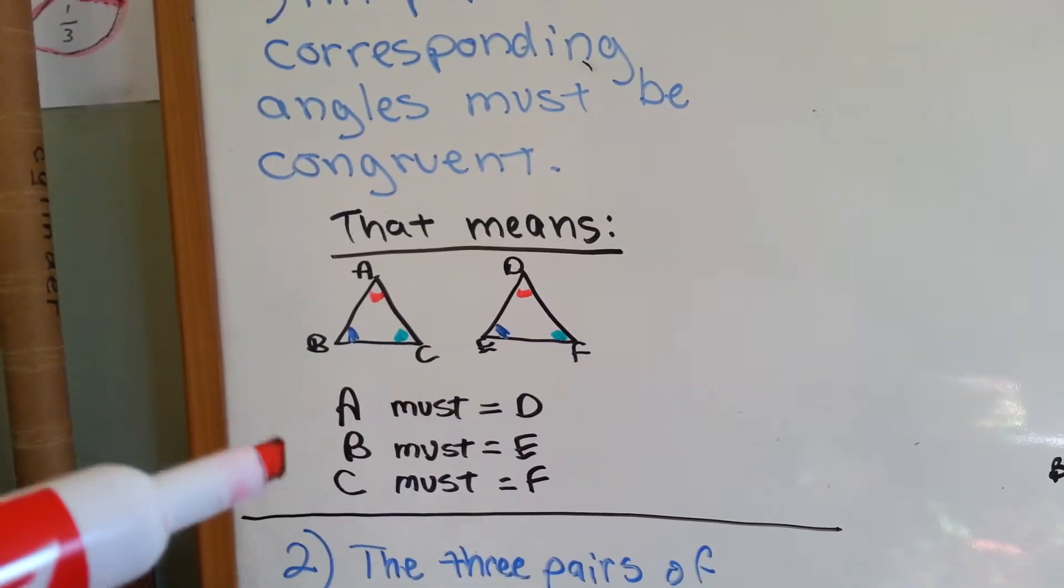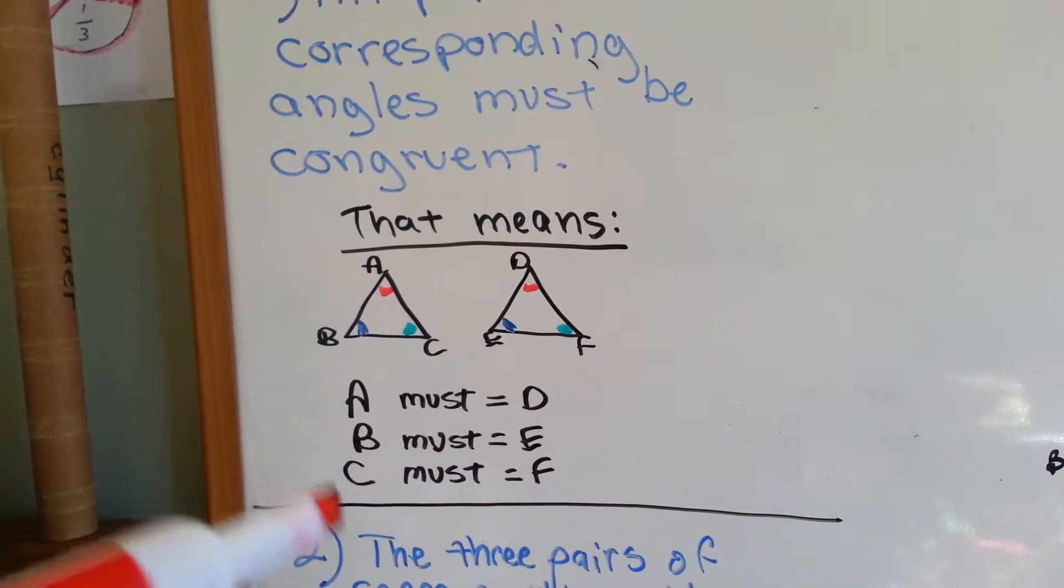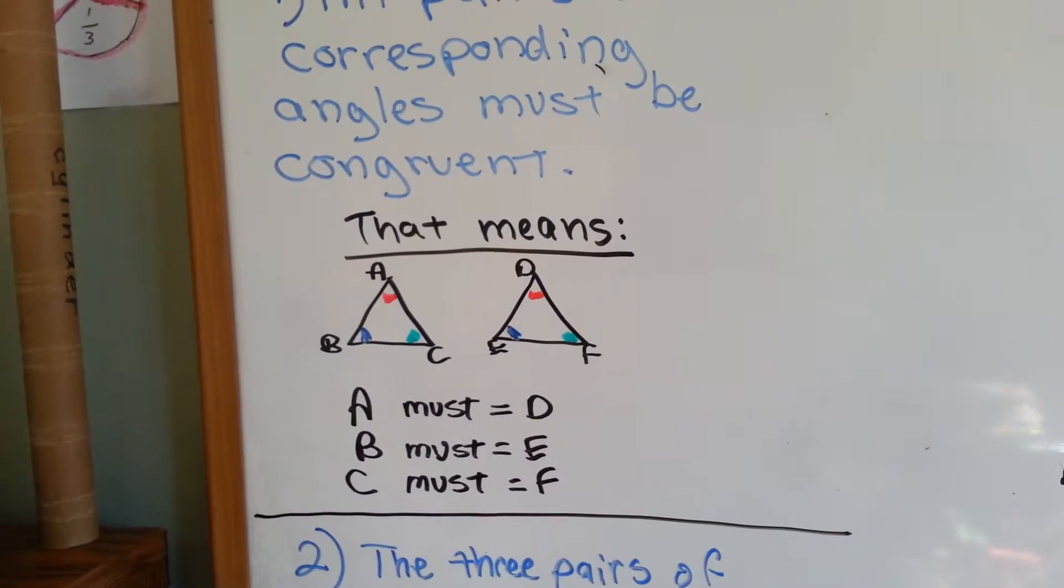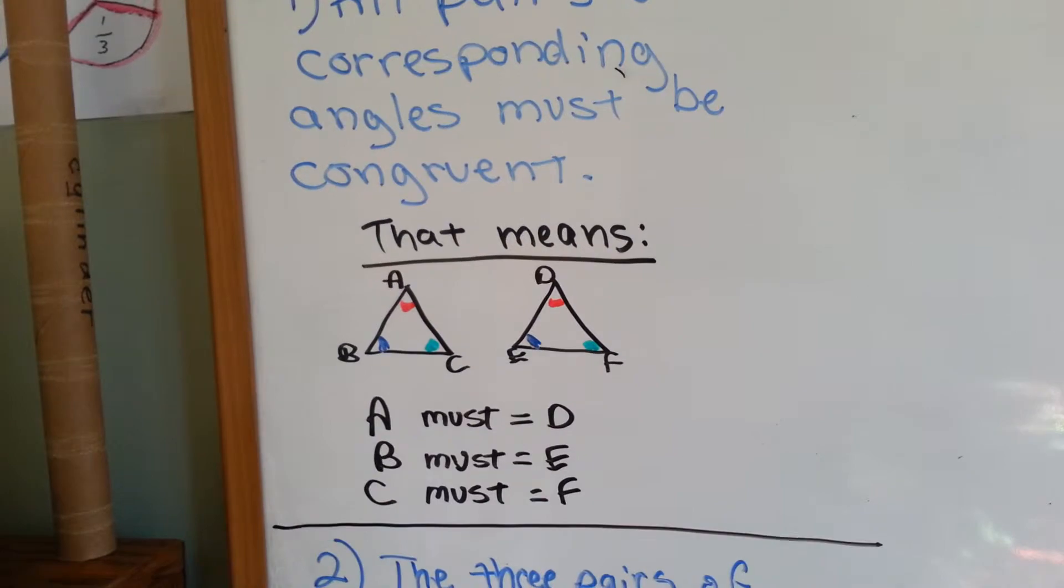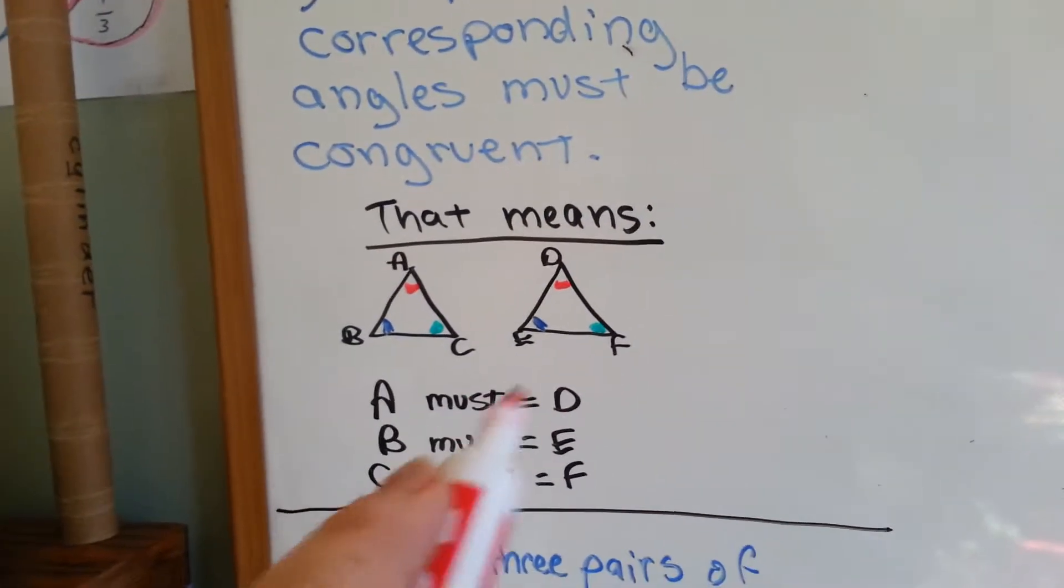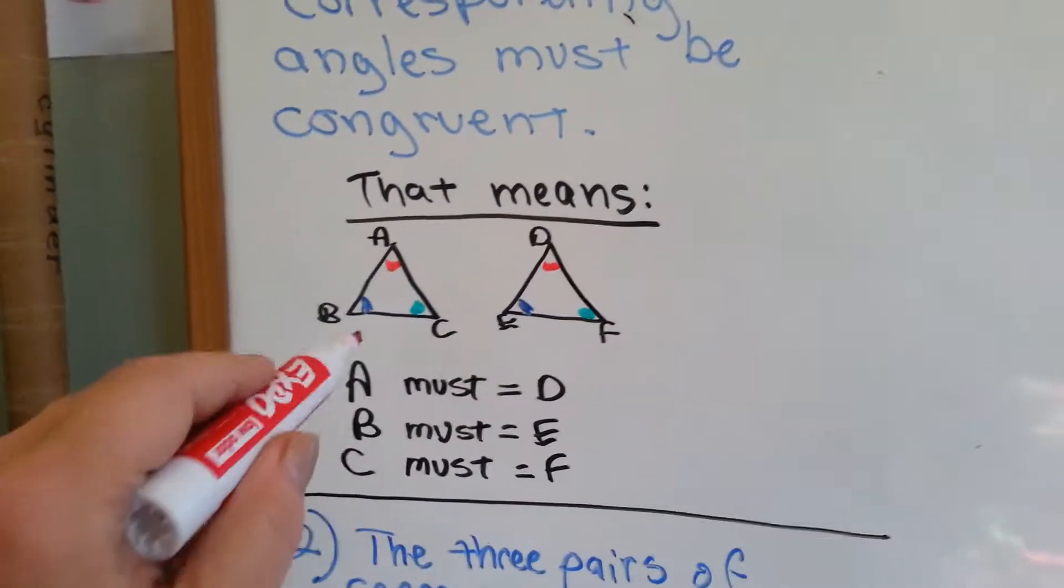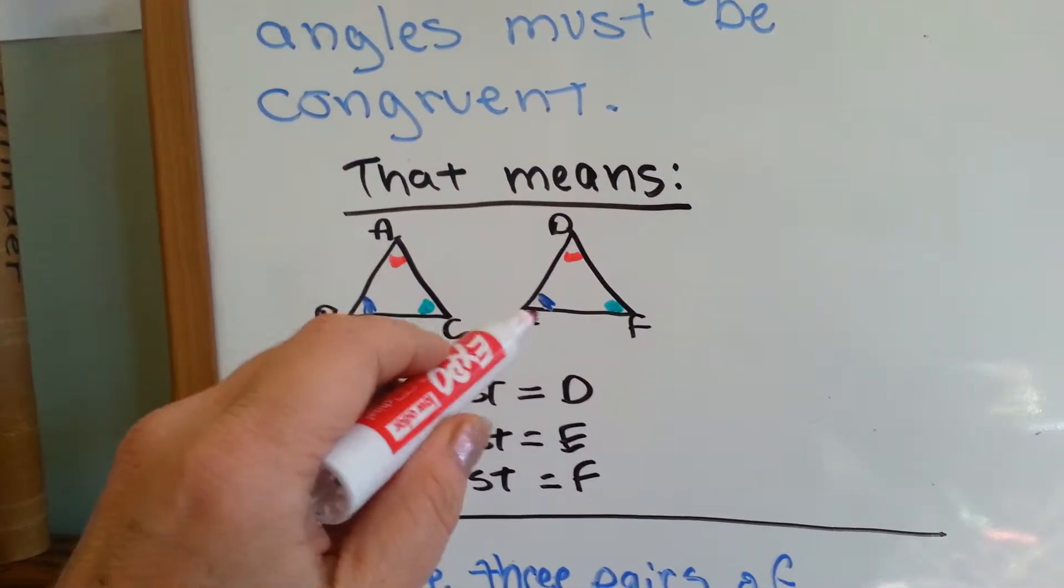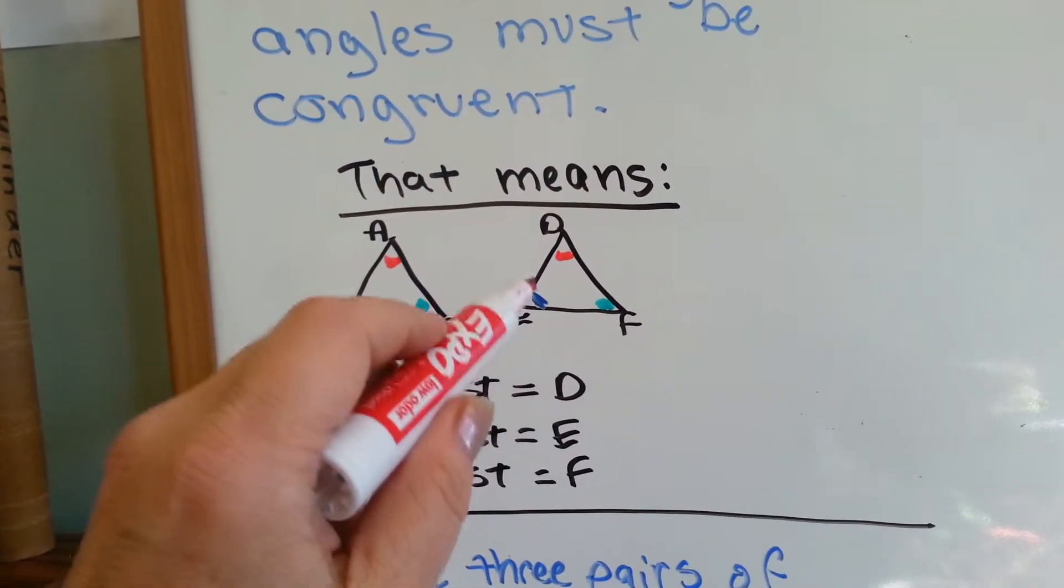So, A must equal D, B must equal E, and C must equal F. And I don't mean that they must be sort of the same. They must equal that. So, if B is a 45-degree angle, then E has to be a 45-degree angle.